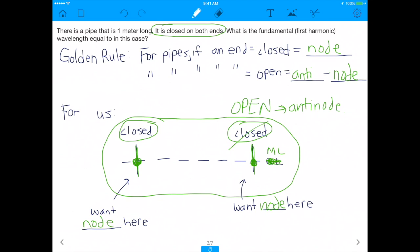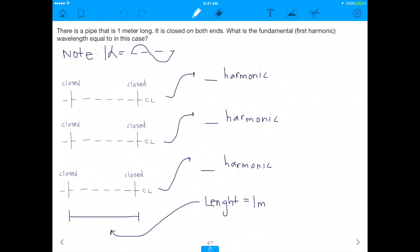But remember, for our case, it's closed on both ends, right? We have a pipe that is one meter long and closed on both ends. So, how can I, if you look at this diagram I've drawn, how can I connect these two closed ends in the simplest way possible, assuming there are nodes? Well, the simplest way possible to connect them would be to just go from node to node. Do you see how I did that? I drew a node on the left side and drew a node on the right side. And that's the simplest way to connect them.